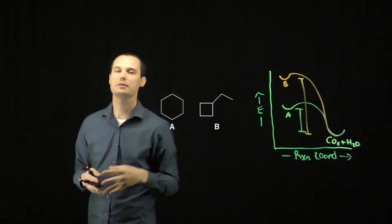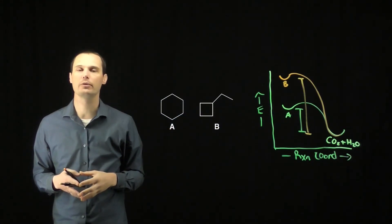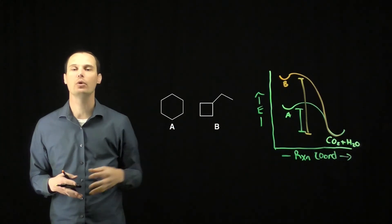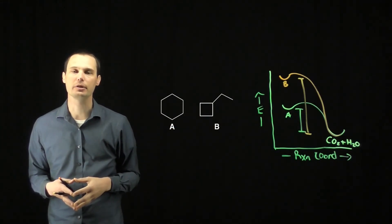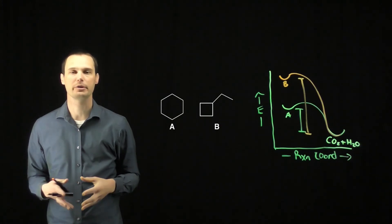In fact, because B is a small strained ring, it starts higher in energy, which means it has farther to fall, which means that B will have the larger delta H heat of combustion given these two different starting materials.